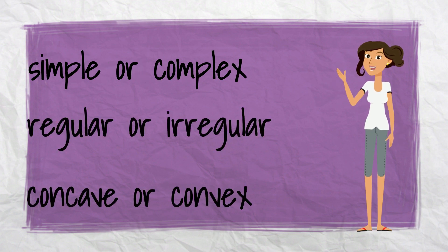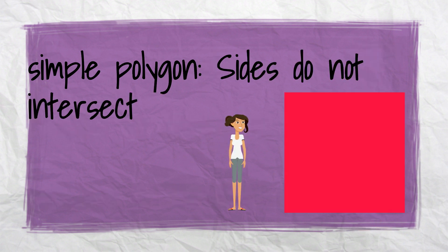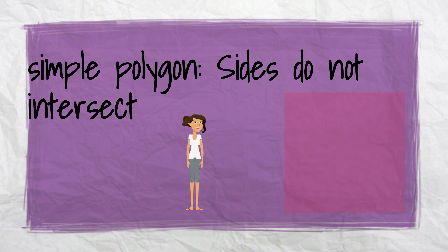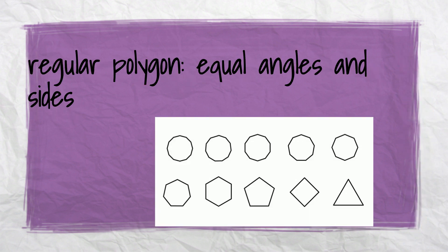Polygons can be categorized as simple or complex, regular or irregular, and concave or convex. In simple polygons, the sides do not intersect, like in a square. Whereas complex polygons have intersecting sides.